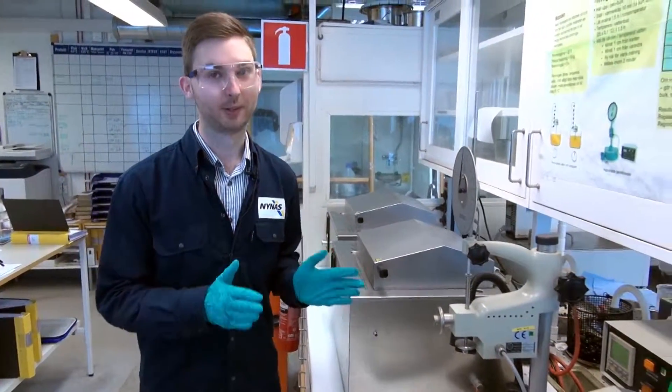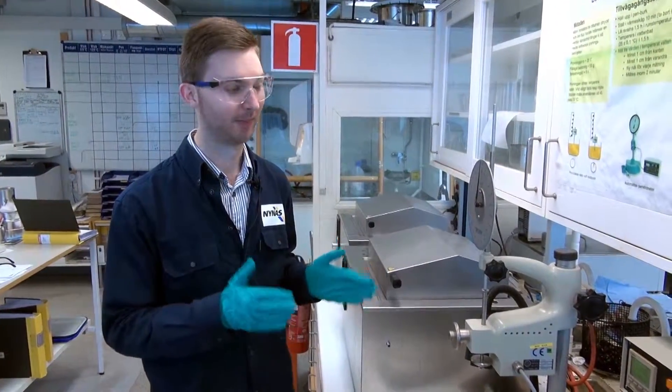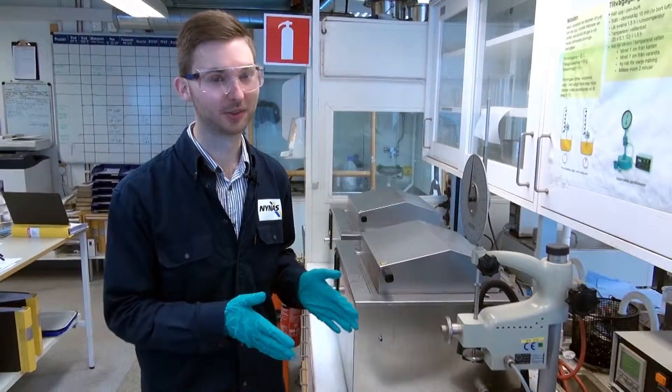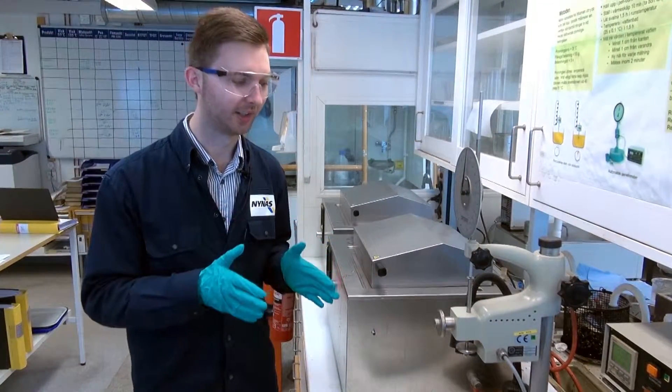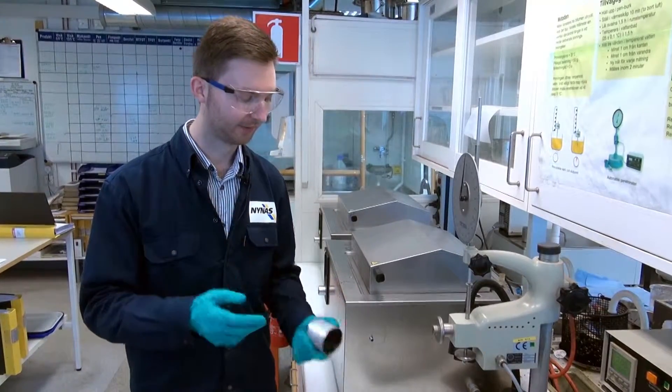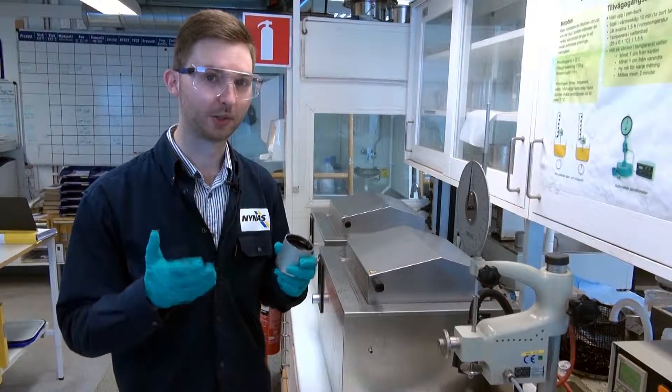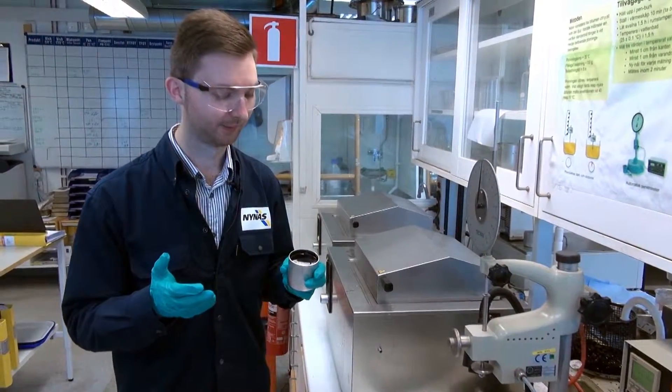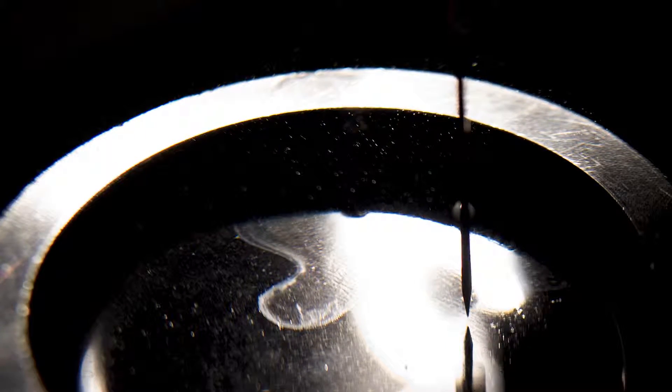So this here is the penetration equipment. It's probably the oldest bitumen measurement, but it's still used. It's some kind of viscosity measurement, but in reality it defines the consistency of a product, of a bitumen, so the hardness or the softness of the binder. We measure how deep a standard needle penetrates into the sample.